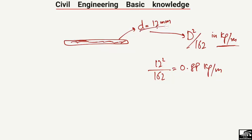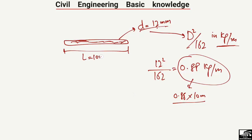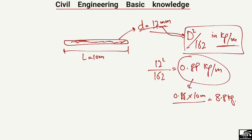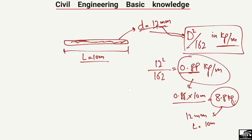So the weight of a 12mm diameter steel bar is 0.88 kg/m. If the bar is 10 meters long, multiply 0.88 by 10 to get the total weight of 8.8 kilograms. Just put the diameter into the formula d²/162 to get the unit weight in kg/m, then multiply by the length to get the total weight of the bar.